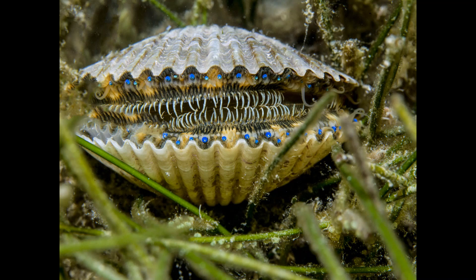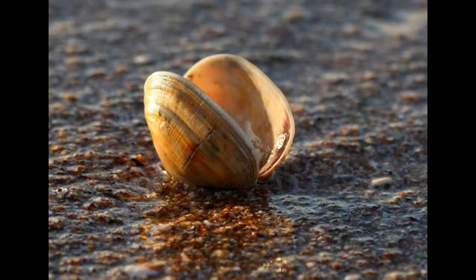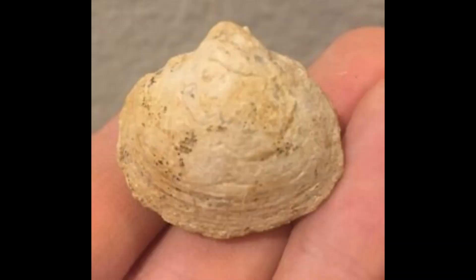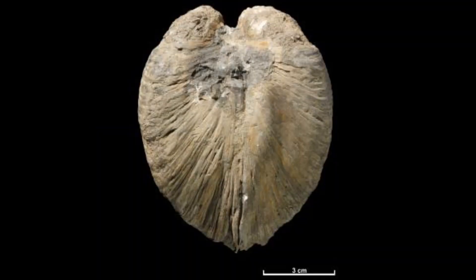Here are some living bivalve examples — you can see the two valves here, and this is the type of shell that you would find washed up on the beach today. The fossils are very similar to the living organisms; they haven't really evolved much since. We can see the two valves, and it's mainly the shell that gets preserved, not the organism itself.